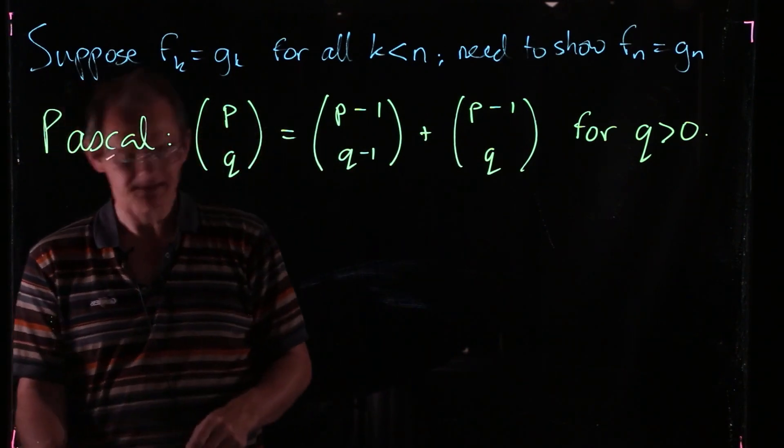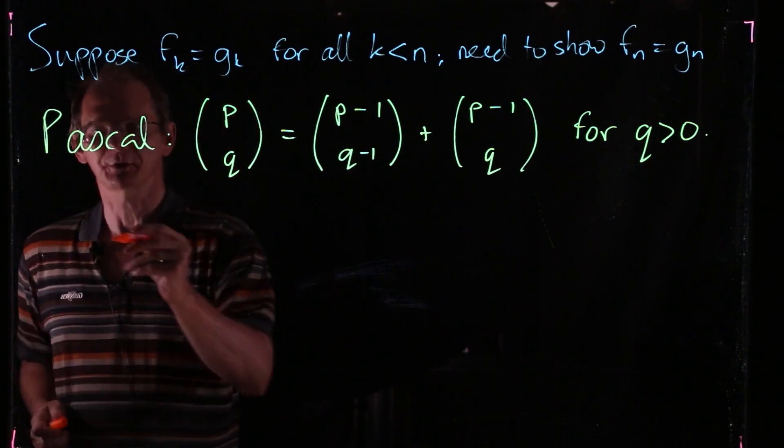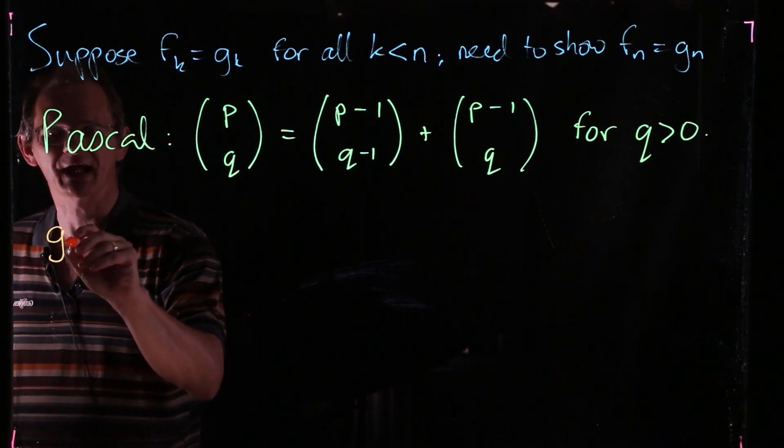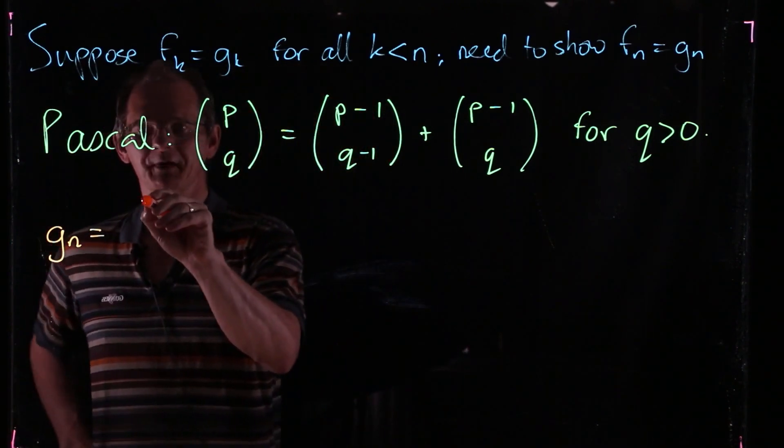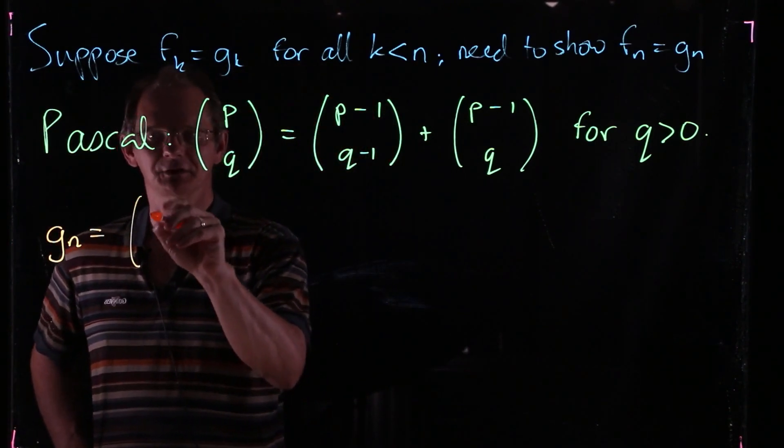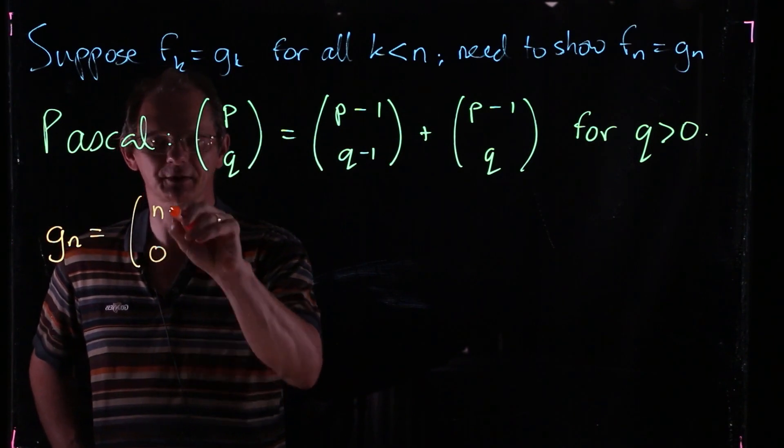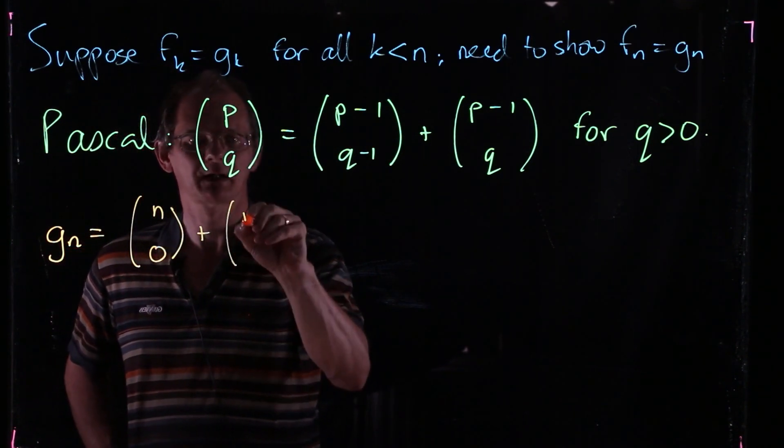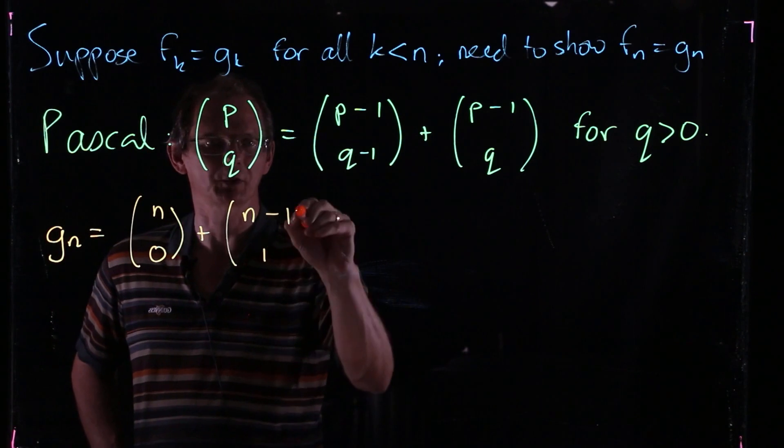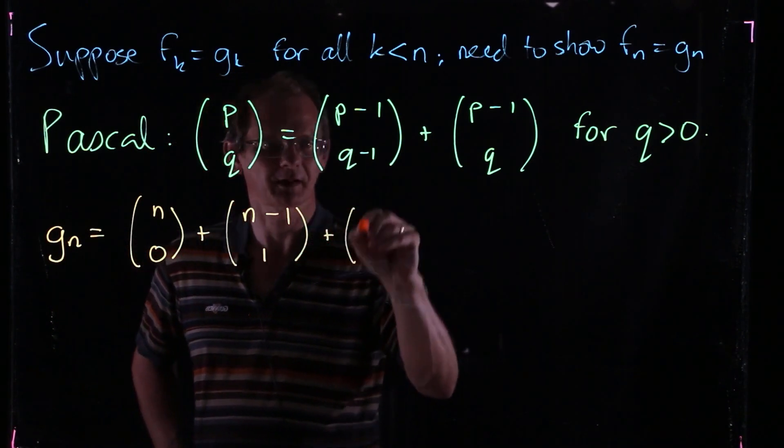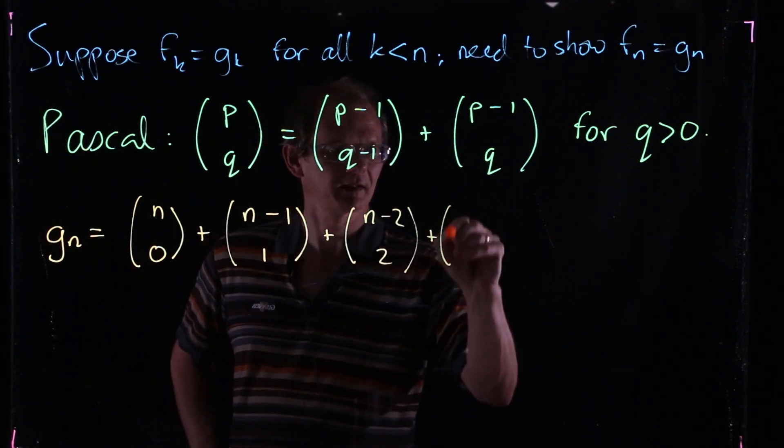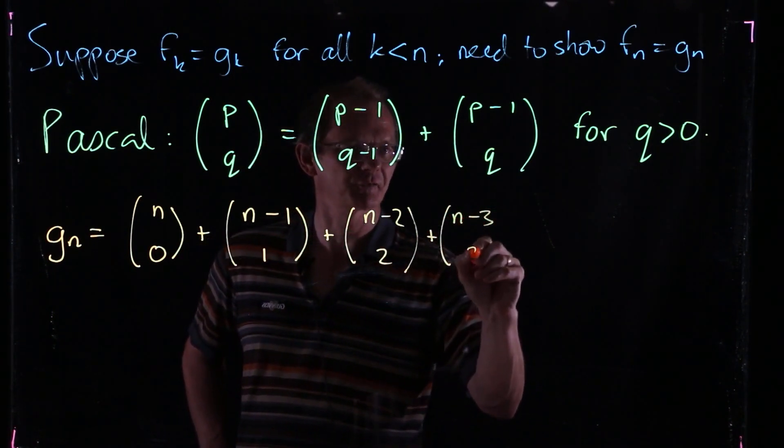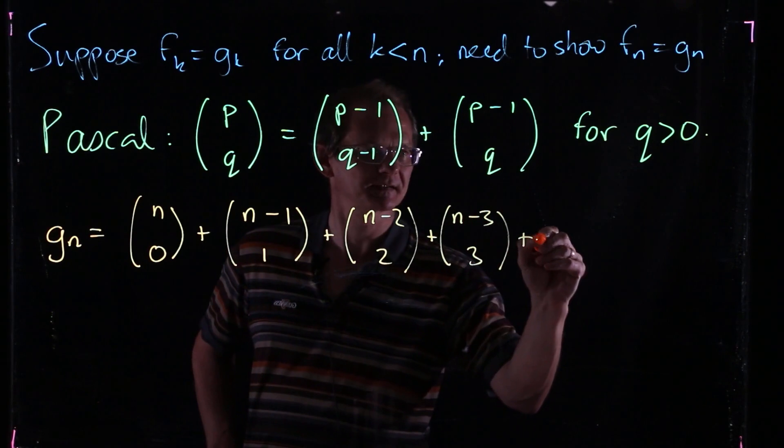So that's what we're going to use. So now let's look at this Gn. It's supposed to be proving that Gn is equal to Fn. So let's recall what was the definition of Gn. Gn was n choose 0 plus n-1 choose 1 plus n-2 choose 2 plus n-3 choose 3 plus etc.